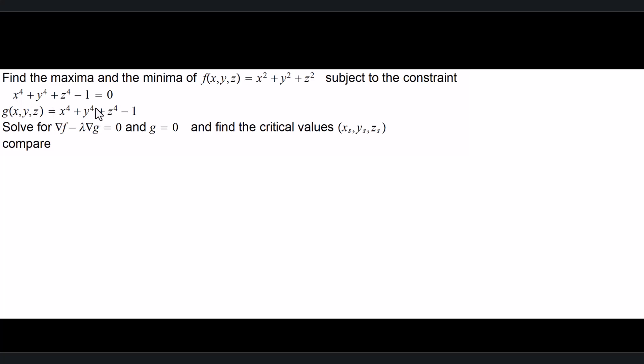So remember when we work it out by hand, what we do is that we use the constraint to define another function, g(x,y,z), just by shifting this to the left, actually just by taking the left-hand side of this.